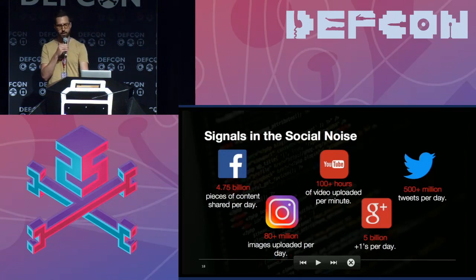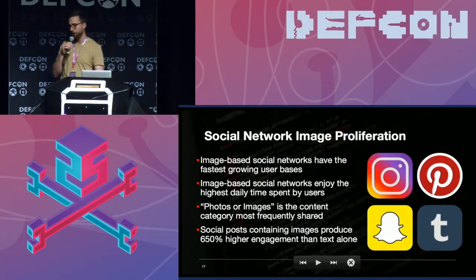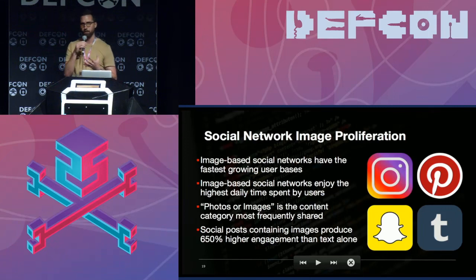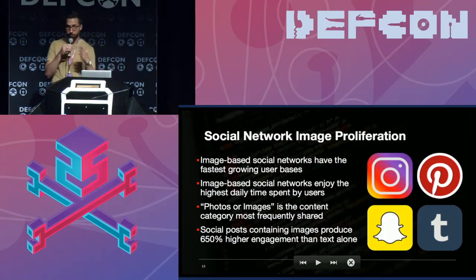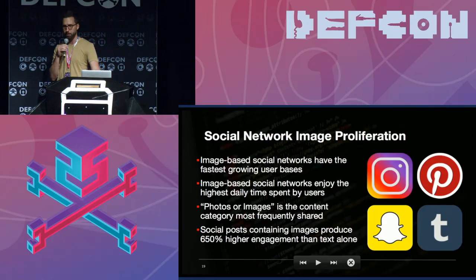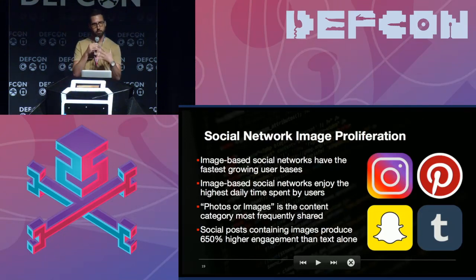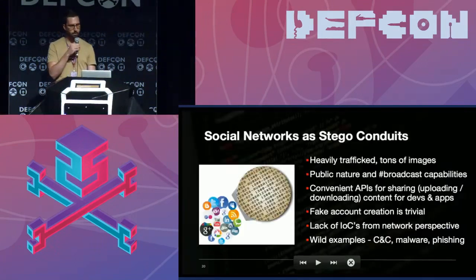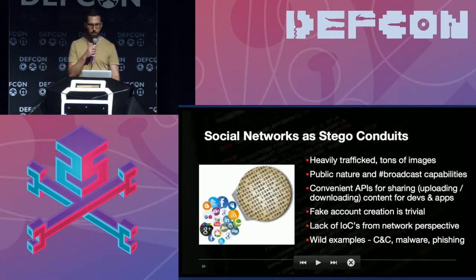Social networks are also evolving. Initially, communication was mostly through text — 140 characters. More and more now, the way we communicate is through images. Networks like Instagram, Snapchat, Pinterest, and Tumblr use images as the primary avenue of communication — whether it be a meme or a photo taken on stage and shared instantly. On top of their heavy traffic and public nature, social networks provide community APIs for sharing content, making it fairly trivial to design code that automatically uploads an image and downloads it. Fake account creation for attribution is also pretty trivial.